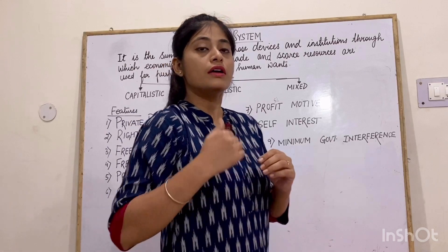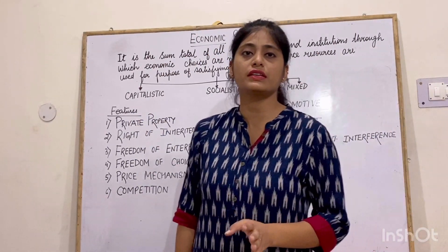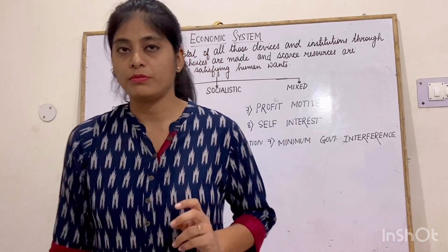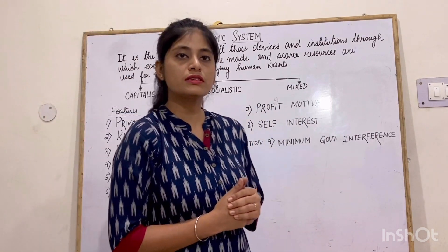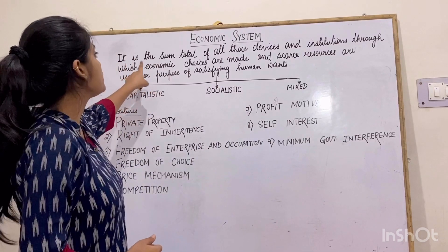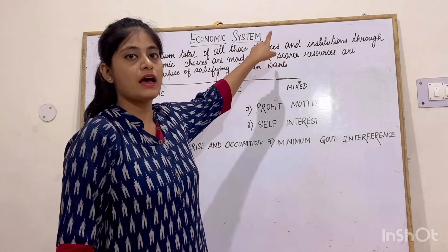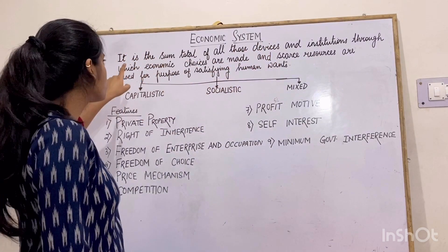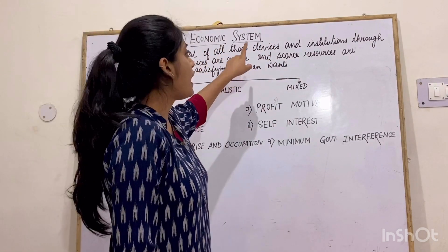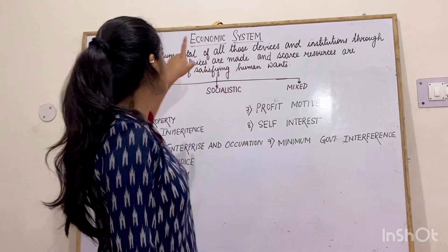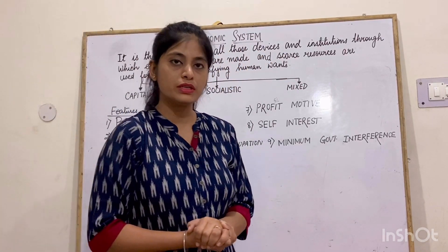How the economies or how the countries are being segregated on the basis of the economic system. An economic system is the sum total of all those devices and institutions through which economic choices are made and scarce resources are used for the purpose of satisfying human want.